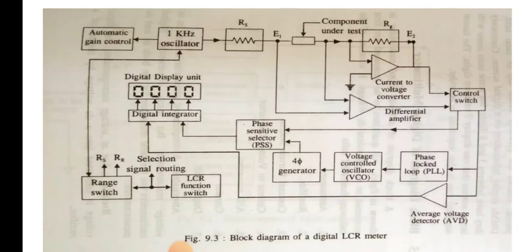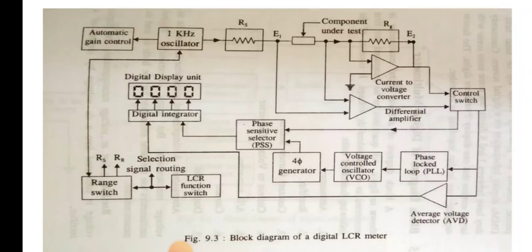The signal current flowing through the component develops a voltage E2, which is proportional to the current. Two voltages are developed: E1 is proportional to the voltage applied across the component under test, and E2 is proportional to the current flowing through the component under test.